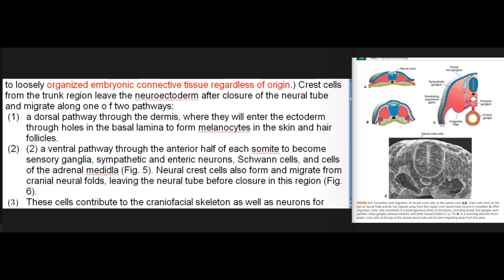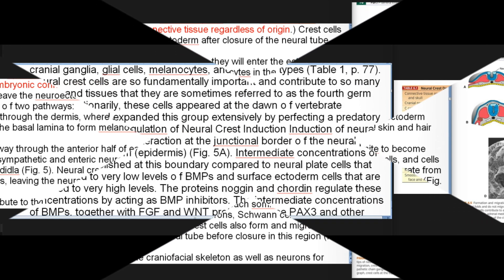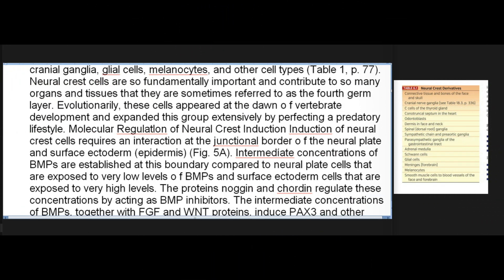Neural crest cells also form and migrate from cranial neural folds, leaving the neural tube before closure in this region. These cells contribute to the craniofacial skeleton as well as neurons for cranial ganglia, glial cells, melanocytes, and other cell types. Neural crest cells are so fundamentally important and contribute to so many organs and tissues that they are sometimes referred to as the fourth germ layer. Evolutionarily, these cells appeared at the dawn of vertebrate development and expanded this group extensively by perfecting a predatory lifestyle.